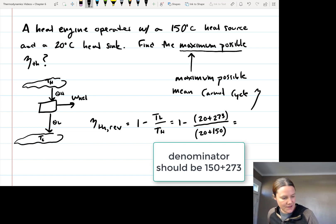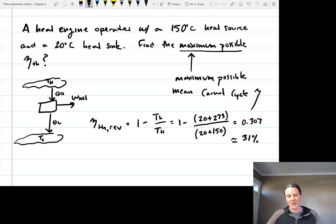And if I do this, that works out to 0.307, which is approximately 31%. So that means that for these two temperatures, for a 150 degree Celsius heat source and a 20 degree Celsius heat sink, the maximum possible efficiency that we can have is approximately 31%.